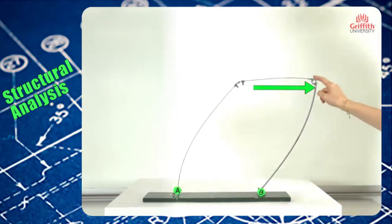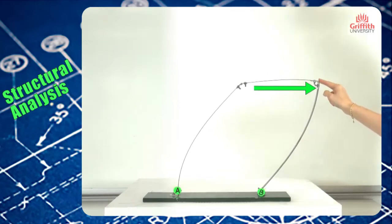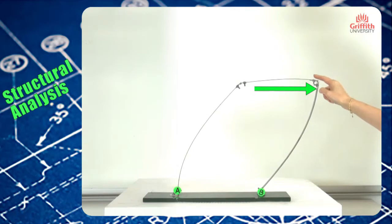However, for this connection, because it is rigid, before and after deformation the beam and the column should remain 90 degrees in angle.